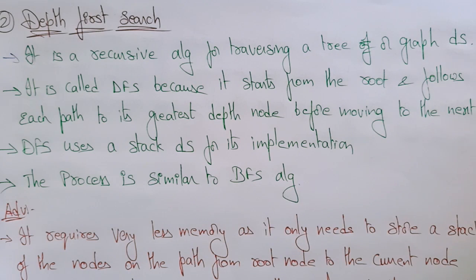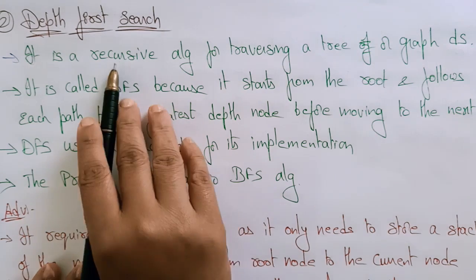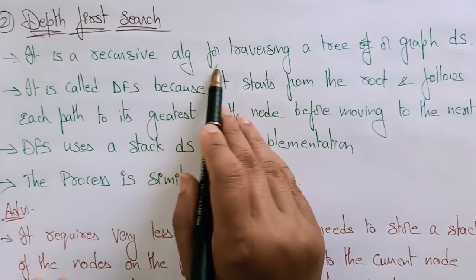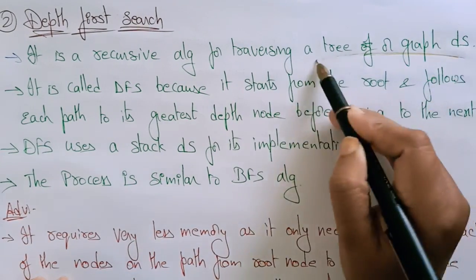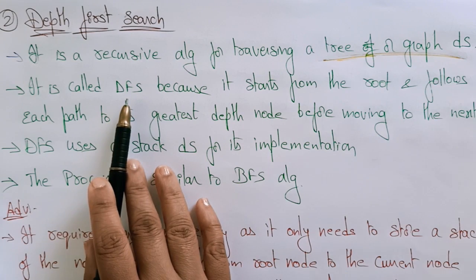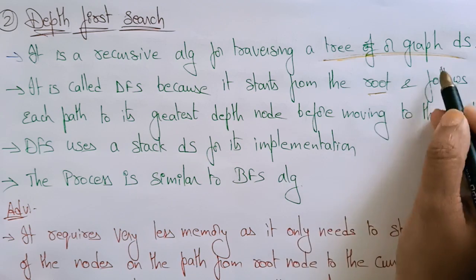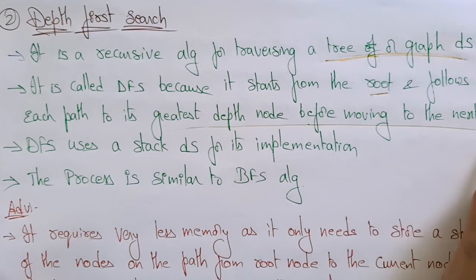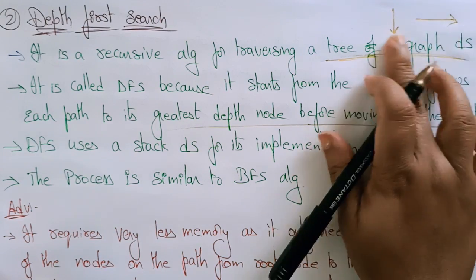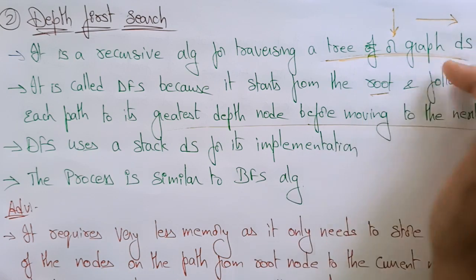Welcome back. Continuing with uninformed search algorithms, in the previous video we explained breadth first search. Another type of uninformed search algorithm is depth first search. It is a recursive or non-recursive algorithm for traversing a tree or graph data structure. It is called depth first search because it starts from the root node and follows each path to its greatest depth before moving to the next path, moving in this direction, whereas breadth first search moves in this direction.